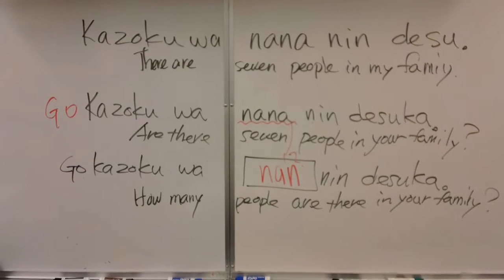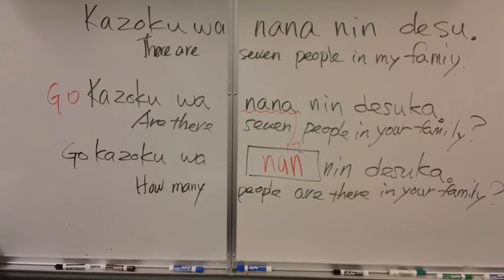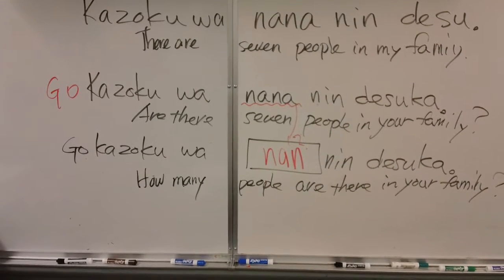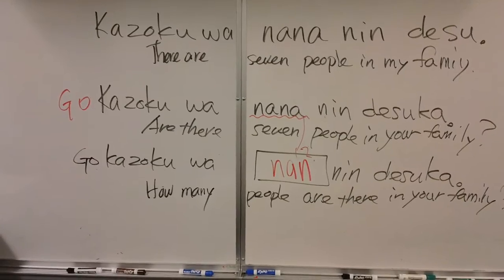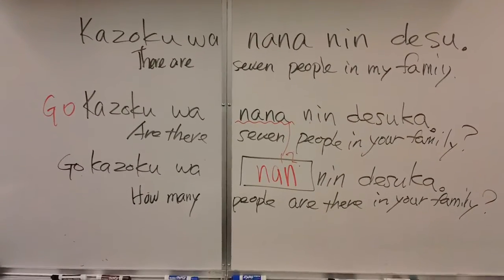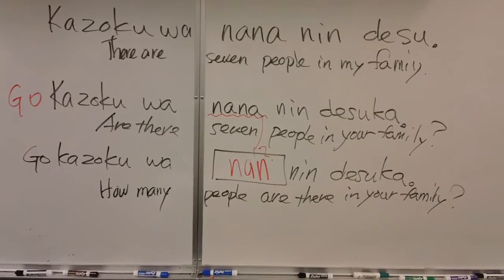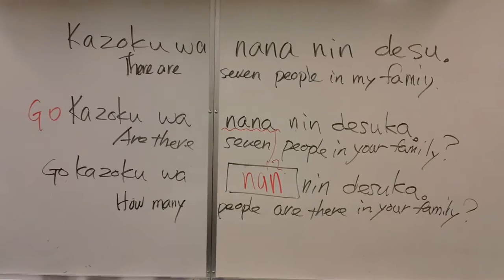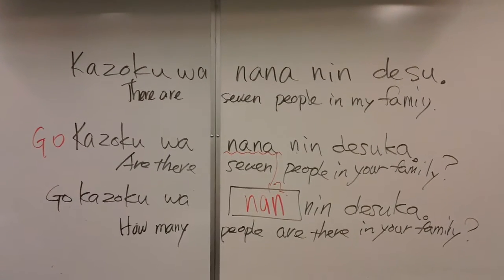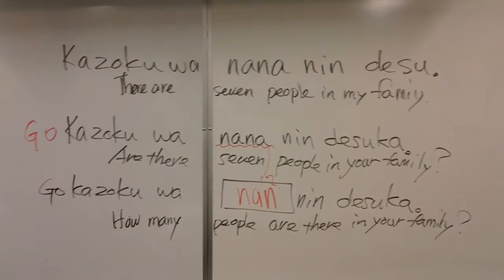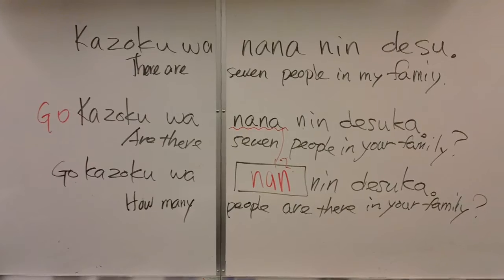There are seven people in my family. So, make a question — how do you change this sentence into a question? ご家族は七人ですか? Or just 家族は七人ですか? That means: are there seven people in your family? If you don't know the number of people, you replace 七人 with 何人. ご家族は何人ですか? — How many people are there in your family? The 何 means 'how many.' So the original sentence is 家族は七人です, and the question is ご家族は七人ですか?